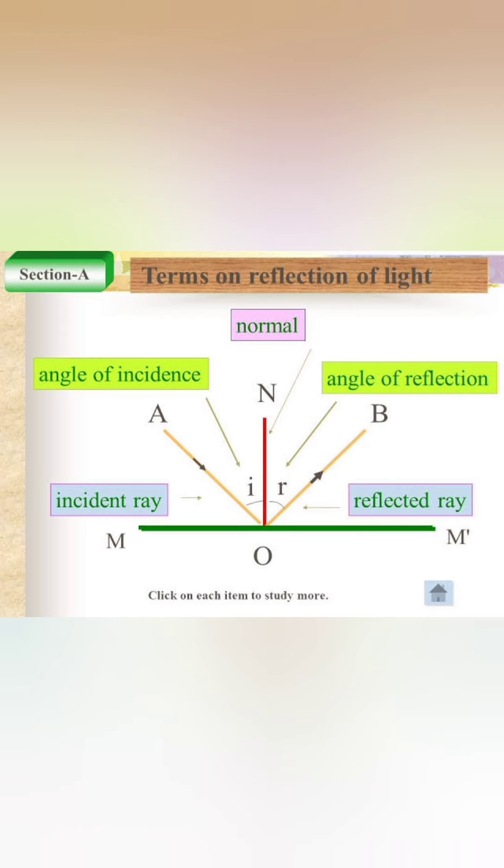In this diagram, M is the plane mirror. AO is the incident ray. O is the point of incidence. OB is the reflected ray. ON is the normal. Angle AON is the angle of incidence, i. And angle BON is the angle of reflection, r.